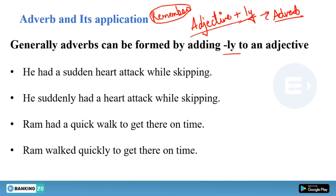Now we have some examples to understand how you can differentiate between adjective and adverb, and how you can form an adverb by simply adding L-Y to an adjective. This sentence says: he had a sudden heart attack while skipping.